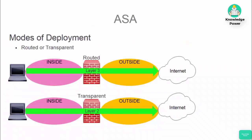ASAs can operate in two different modes: routed and transparent. Routed mode has layer 3 interfaces, while transparent mode has layer 2 interfaces. 99% of the time, ASAs are deployed in routed mode, and transparent mode is less common. A use case for transparent mode would be if you had a LAN segment you wanted to inspect traffic on with no routing capabilities — transparent mode enforces traffic at a layer 2 level. Routed mode is the default, and to switch to transparent mode you use the global configuration command firewall transparent.